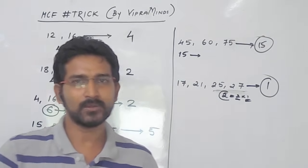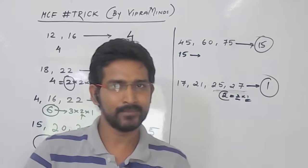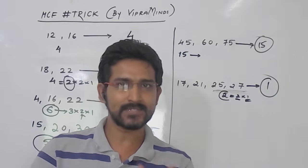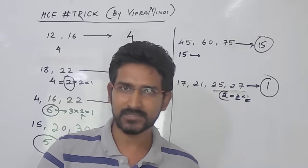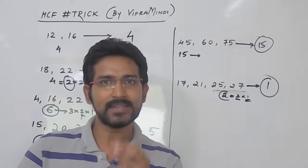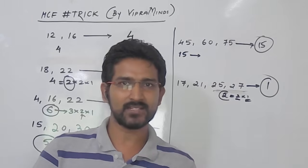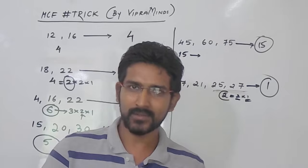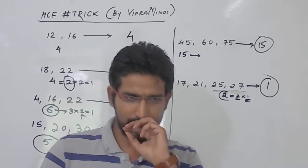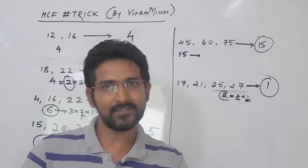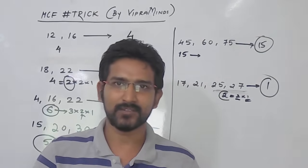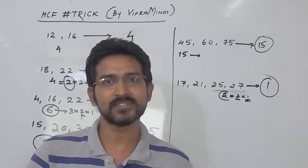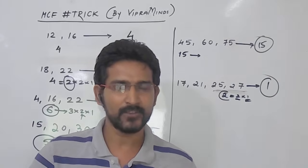So this is how we can find out the HCF of any numbers. What you have to do is find out the least difference between the given numbers and check whether the least difference is the divisor of all the numbers. If it is not the divisor, find the factors of that number and whichever factor is the divisor of all numbers will be the HCF. So this is how we can calculate HCF in just few seconds. Hope it will be helpful for you. Thank you.